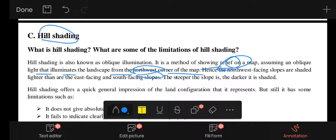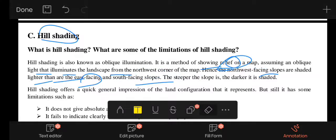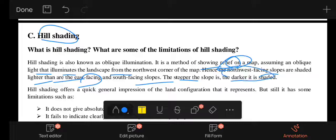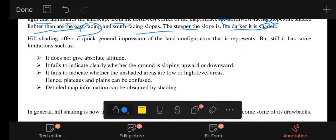Northwest facing slopes are shaded lightly while southeast facing slopes are heavily shaded. The steeper the slope, the darker the shading. The gentler the slope, the lighter the shading. Hill shading still has limitations.